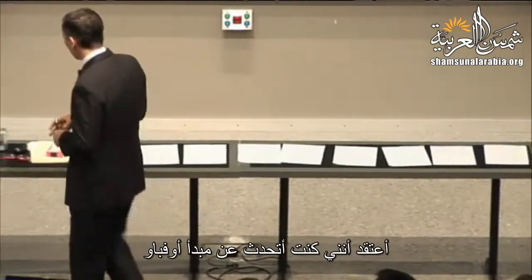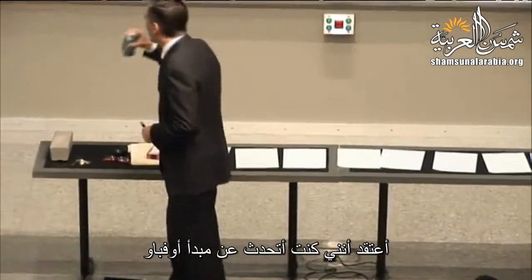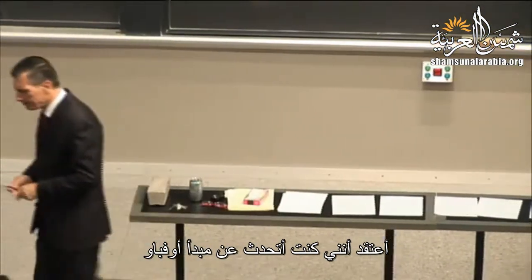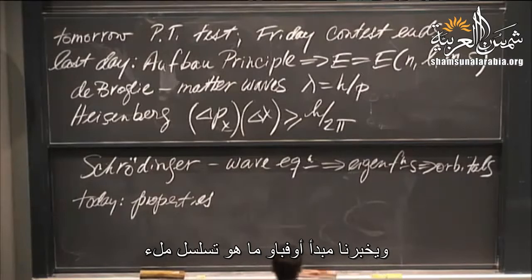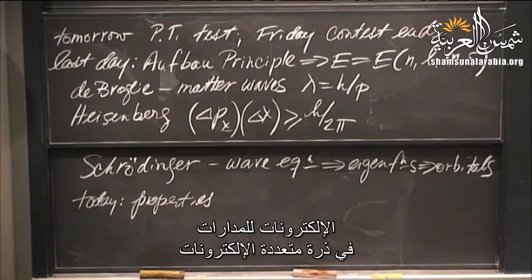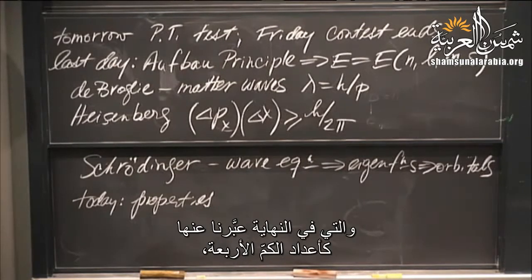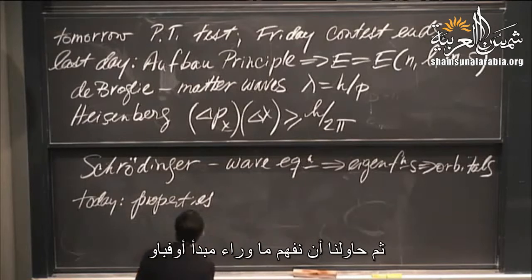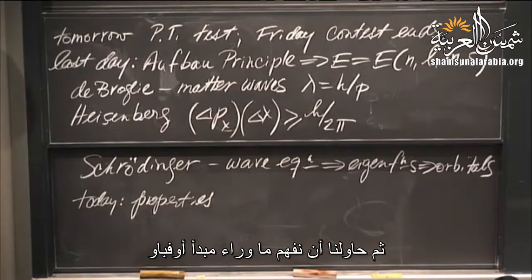So, the Aufbau Principle tells us what the filling sequence of electrons is in a multi-electron atom, which we rationalized in terms of the four quantum numbers and filling in ascending order of energy. Then we tried to understand what's behind the Aufbau Principle.